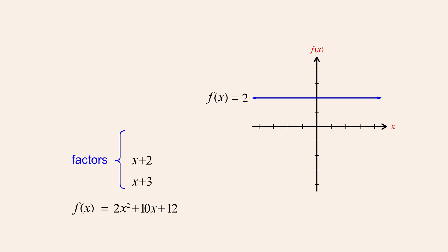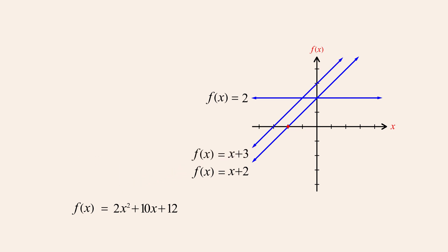The second factor, x-plus-two, is a linear function that has a zero of negative two. Likewise, the third factor, x-plus-three, is a linear function with a zero of negative three. And the zero product property tells us that these zeros are also the zeros of the quadratic function.